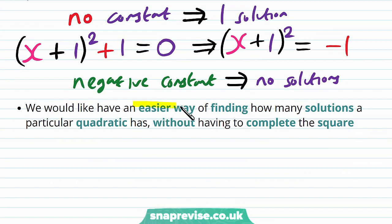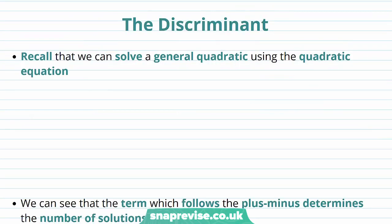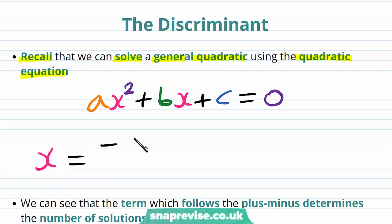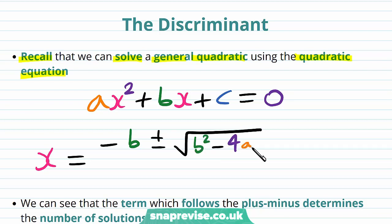We would like to have an easier way of finding how many solutions a particular quadratic has without having to complete the square. Recall that we can solve a general quadratic using the quadratic formula. For ax squared plus bx plus c equals zero, we can use the quadratic formula to get the roots: x equals minus b plus or minus the square root of b squared minus 4ac, all divided by 2a.